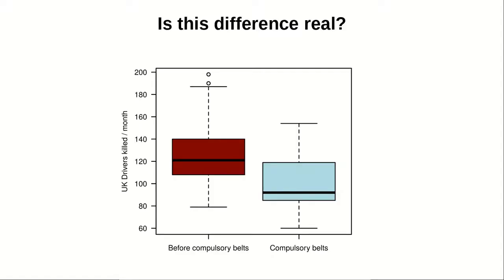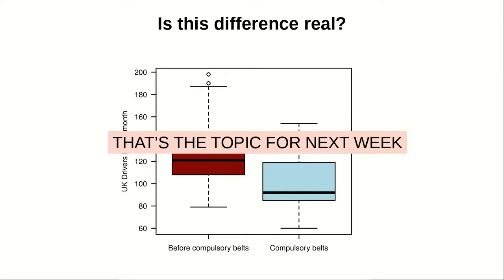So going back to this graph, the question from a statistical point of view is that, okay, we observed a difference. So apparently, before belts were compulsory, there were more deaths per month than after the belts were made compulsory. But the question is: is this difference real? So that's the topic for next week.